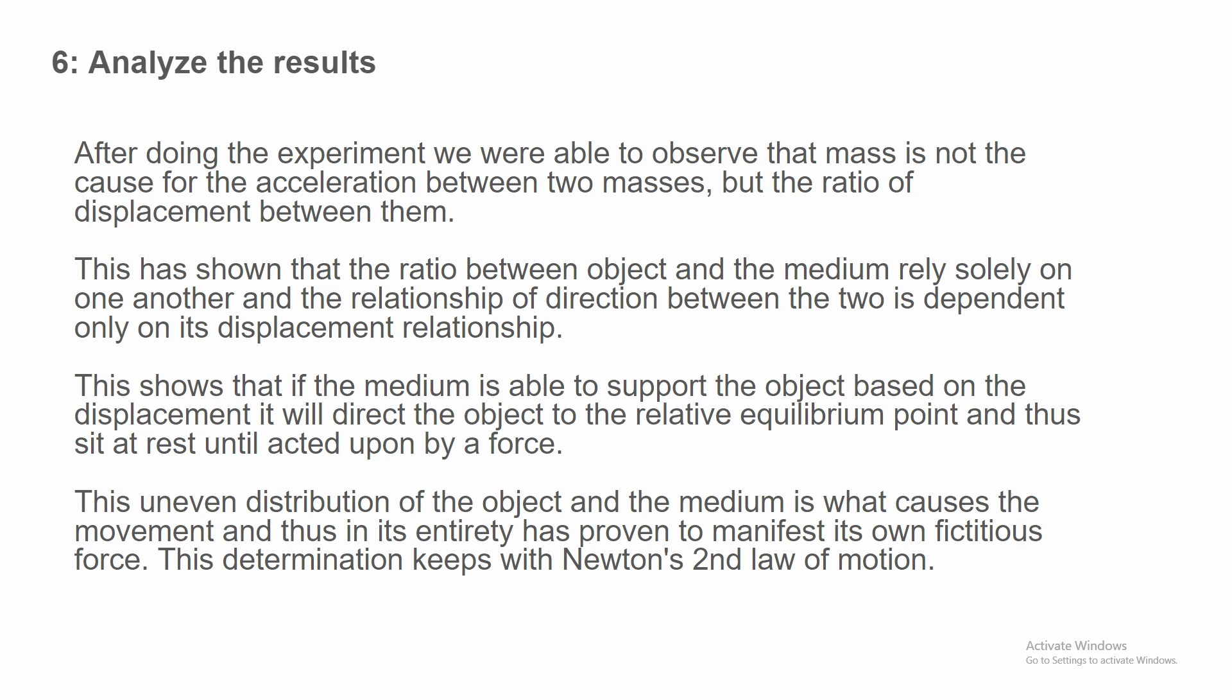Then we move on to analyze the results. After doing the experiment, we were able to observe that mass is not the cause for the acceleration between two masses but the ratio of the displacement between them. This has shown that the ratio between the object and the medium relies solely on one another, and the relationship of direction between the two is dependent on only its displacement relationship. This shows that if the medium is able to support the object based on the displacement, it will direct the object to the relative equilibrium point and thus set at rest until acted upon by a force. This uneven distribution of the object and the medium is what causes the movement, and thus in its entirety has proven to manifest its own fictitious force. This determination means and keeps with Newton's second law of motion.